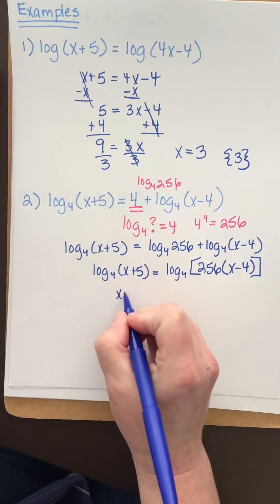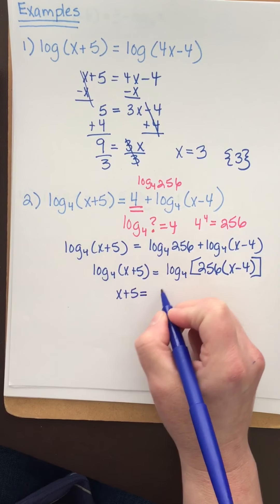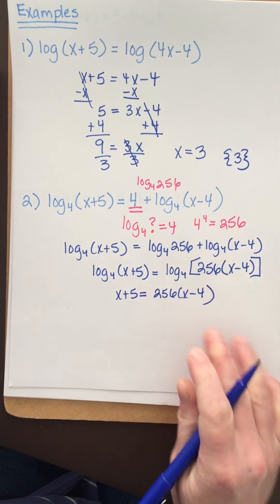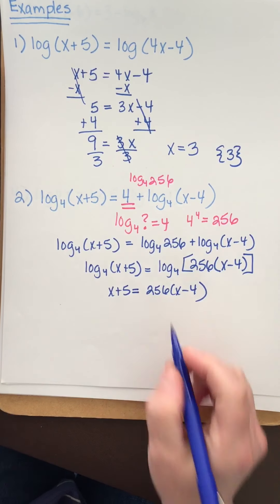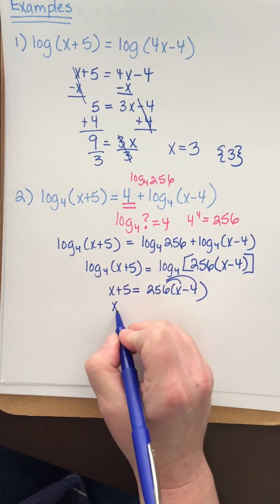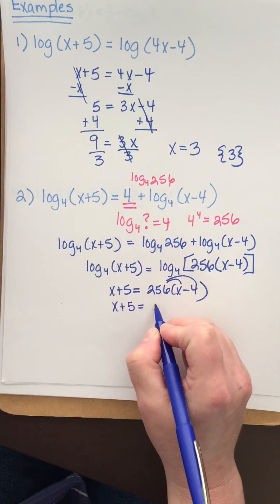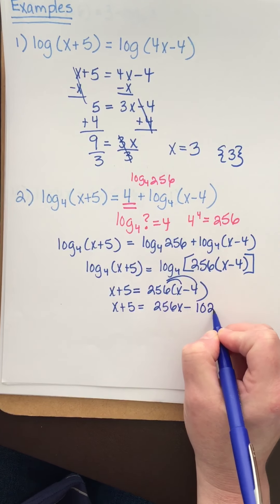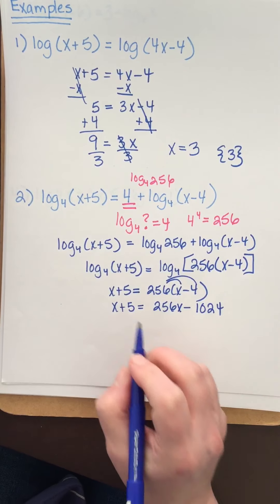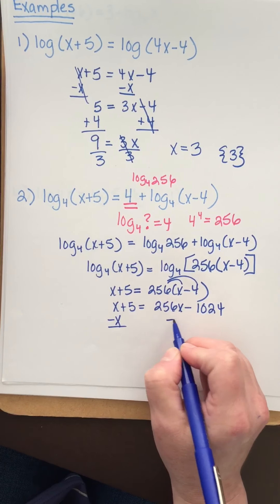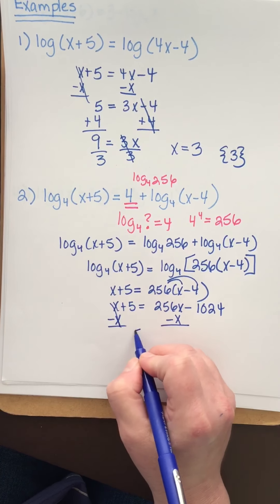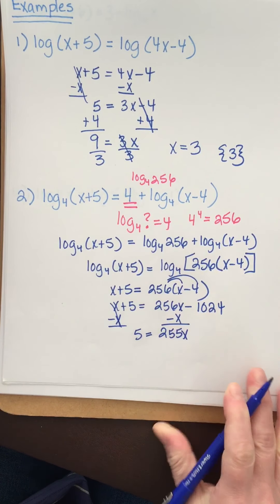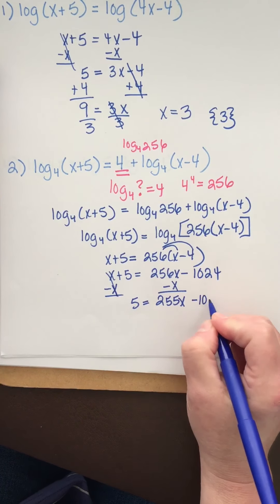Because of this, I know that x plus five must be equal to 256 times x minus four. Distribute: I get x plus five equals 256x minus 1024. I'm going to subtract x from both sides. That'll cancel. Five equals 255x minus 1024.